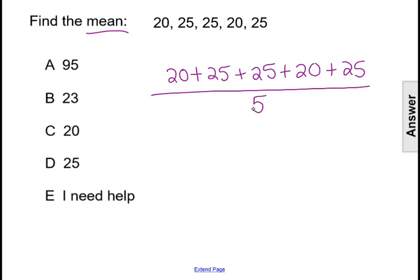Well, the sum of those numbers is 115 and 115 divided by 5 is 23.